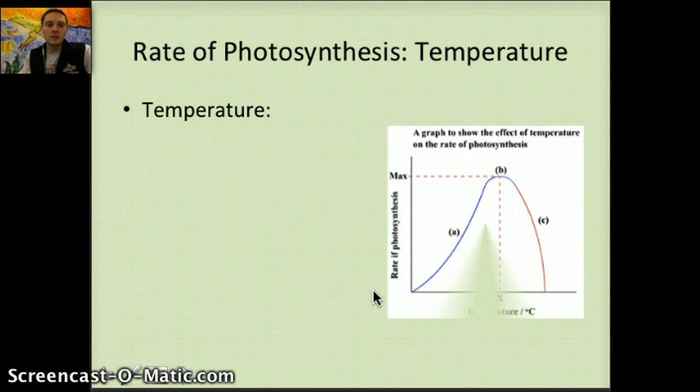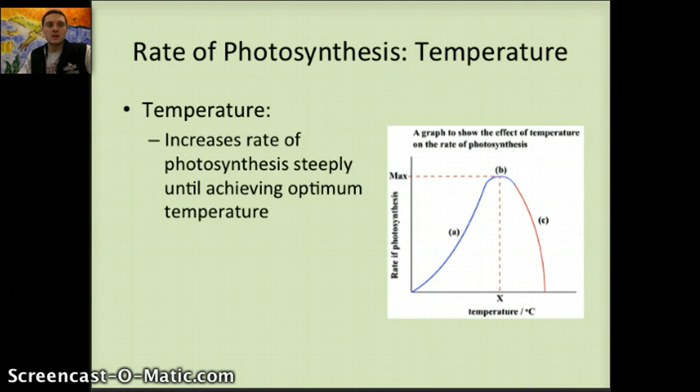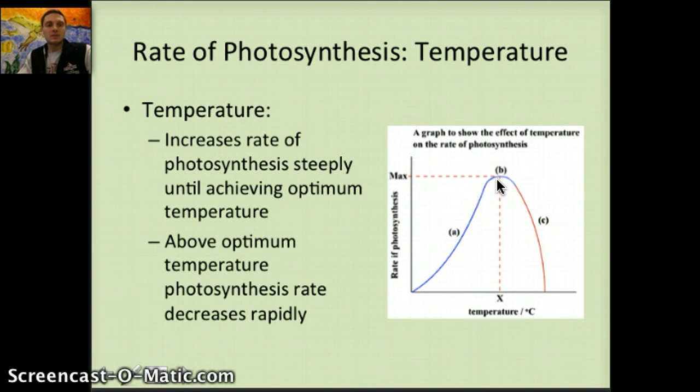And so with temperature, as temperature increases, the rate of photosynthesis is going to increase up to a specific point. Anything above that specific temperature is going to cause a decrease in the rate of photosynthesis. And that's actually a very quick decrease. So temperature can increase the rate of photosynthesis pretty quickly, pretty steeply, until achieving this optimum temperature, about here in this graph. And then above that temperature, the rate of photosynthesis is going to decrease very rapidly. So that's our first factor that can affect the rate of photosynthesis: temperature.